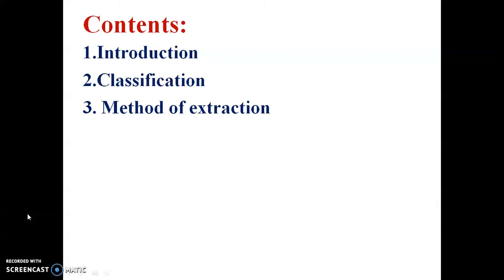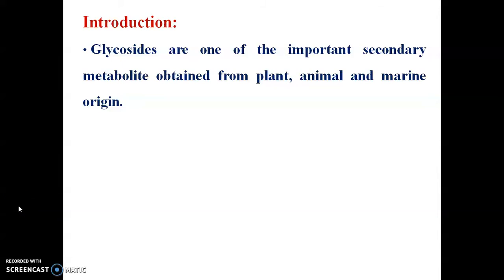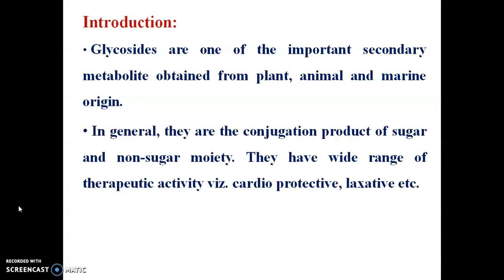Coming to the introduction part: what are glycosides? Glycosides are one of the important secondary metabolites obtained from various natural sources. These natural sources may be from plant origin, animal origin, or marine sources. In general, glycosides are the conjugation product of sugar and non-sugar moiety.